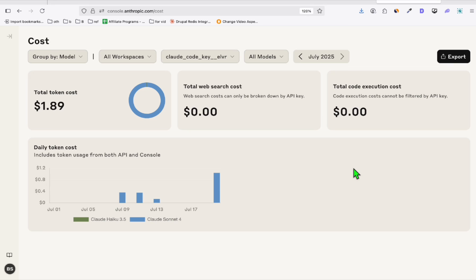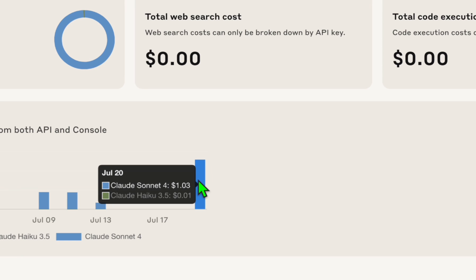Take a look at how much we spent. So today, the total amount we spent for that particular custom prompt and entire directory is just $1.03. Imagine if you're going to pay a developer for that type of theme — it would cost you not less than $500. But this one, it's just $1.03.